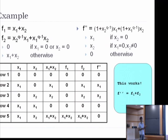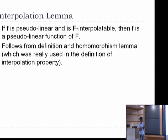The notion of interpolatability is key. A pseudo-linear function is interpolatable in terms of a bunch of functions if each row is a linear combination, and for each two isomorphic rows, it is the same linear combination. The theorem says that if the target function is pseudo-linear and interpolatable in terms of the given input functions, then f is indeed a pseudo-linear function. The surprising lemma is the converse: if f is pseudo-linear and not interpolatable, then f is not even a function of those inputs at all — let alone a pseudo-linear function. That is a bit surprising.